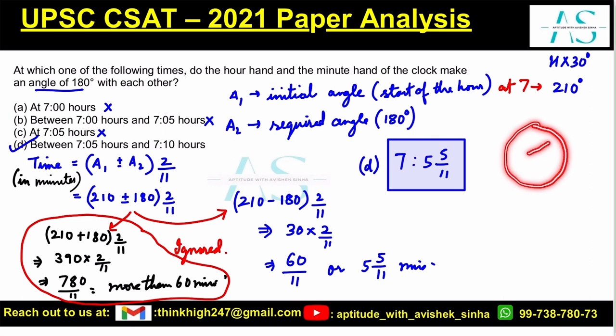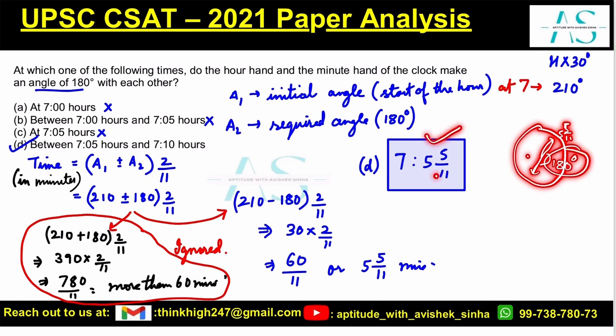Try to plot 7:05 and 5/11 minutes on a clock and you will see that the angle is almost exactly 180 degrees — at this particular time it will be exactly 180 degrees. This is an important type of clock problem and this formula deserves your full attention. The key is to understand the basic formula and how it is applied.